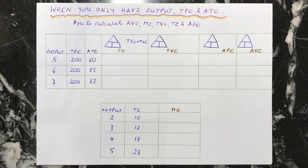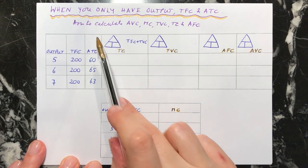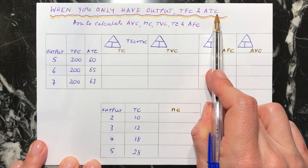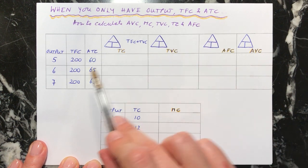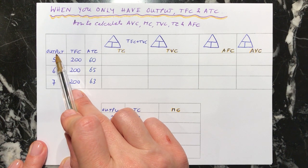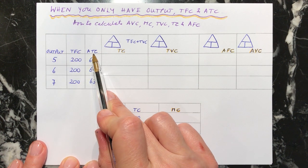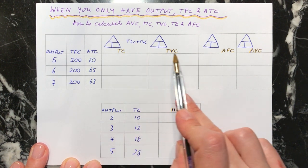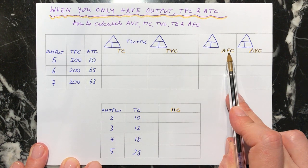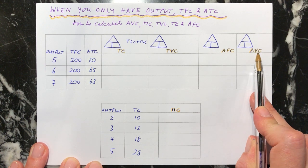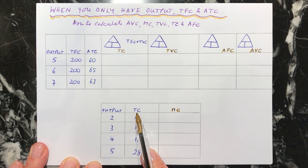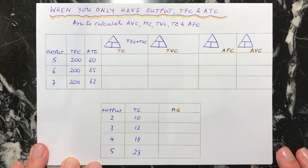Hi everybody. In this video I'm going to explain how you work out certain costs when you're only given a small amount of information. So what do you do if you only have figures for output, total fixed costs, and average total costs? How would you work out your total costs, total variable costs, average fixed costs, and average variable costs? And I'm also going to show a situation where you know your output and your total costs — how would you then work out your marginal costs?